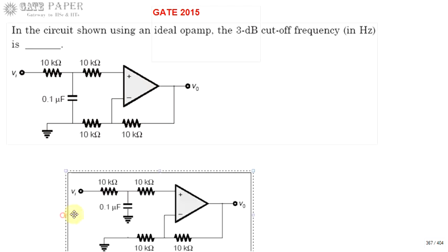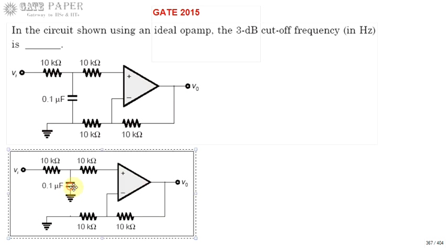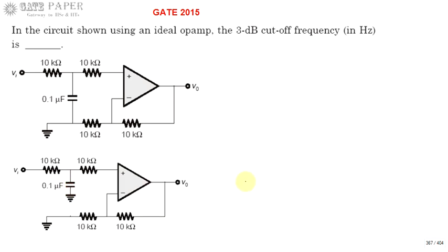The same circuit can be redrawn like this. Look at both circuits. What I have done is ground is going to be separated for capacitor as well as resistor. Now if you observe, this operational amplifier is going to be having a negative feedback.